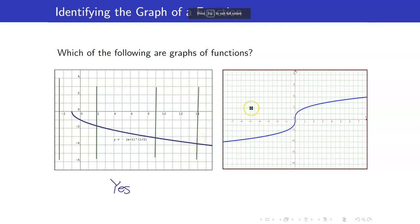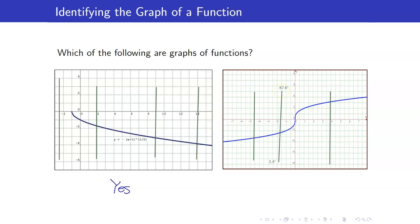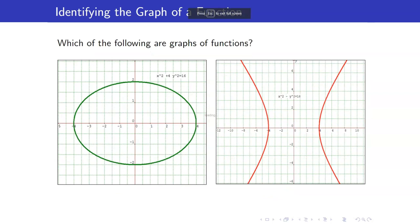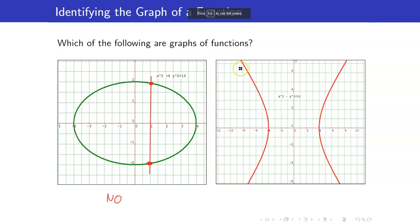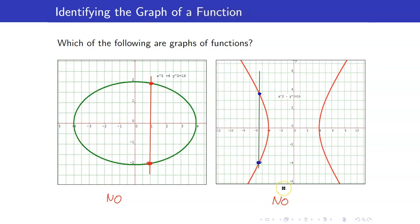For the fourth graph, wherever I draw my vertical line, it will always intersect the graph at exactly one point — so the answer is yes, this is a function. For the fifth graph, if I draw a vertical line, it intersects the graph at two points, so the answer is no — it is not a function. For the sixth graph, if I draw a vertical line, it intersects the graph at two points as well — so the answer is no, it is not a function.